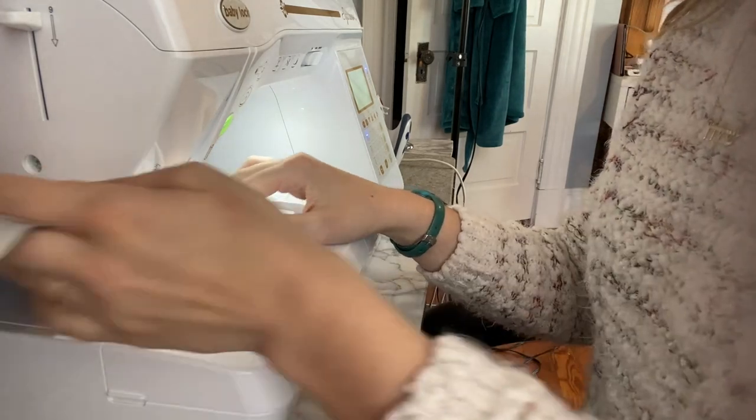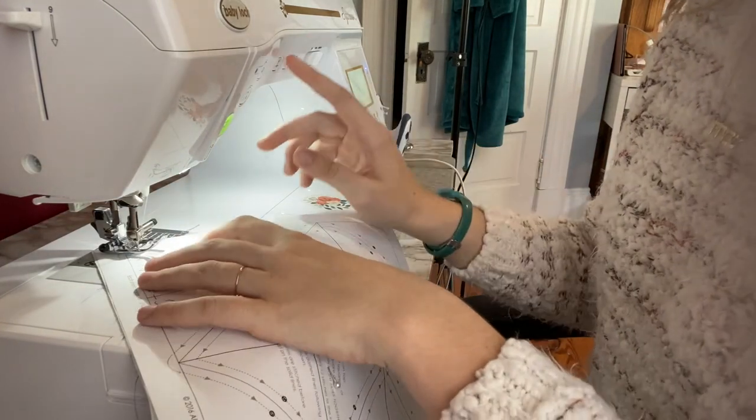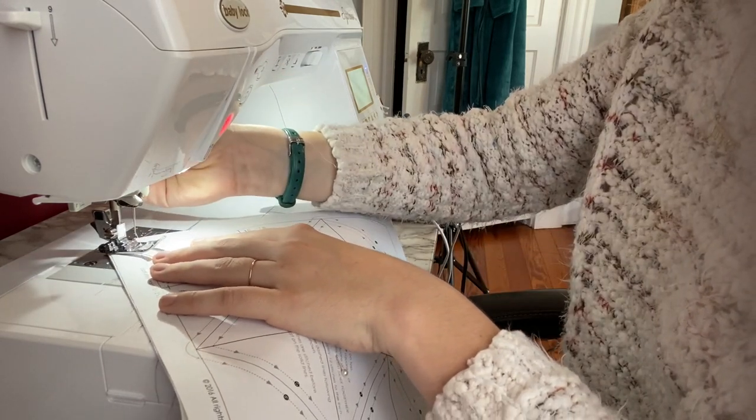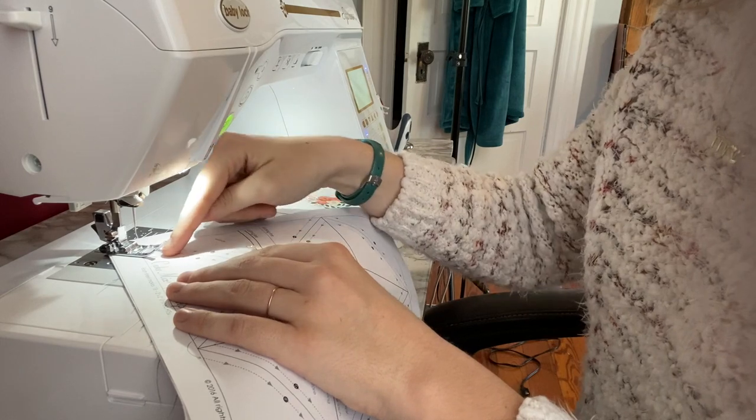My pivot function is making it so that my machine automatically stops with the needle down and the presser foot up. I'm going to pivot my piece here and I am actually going to now pull my needle up and move my presser foot over to my next line number four.